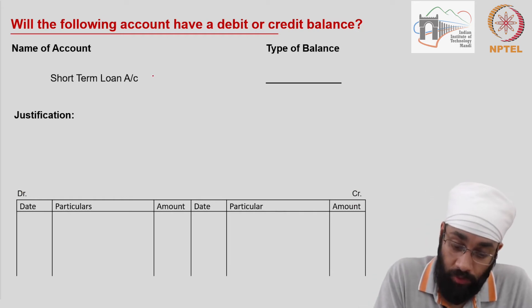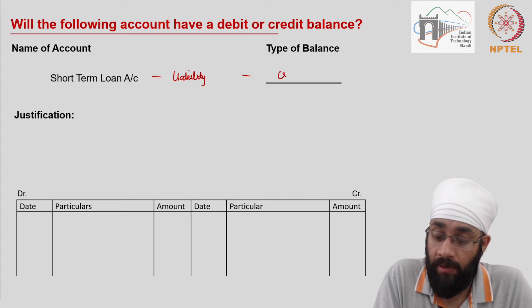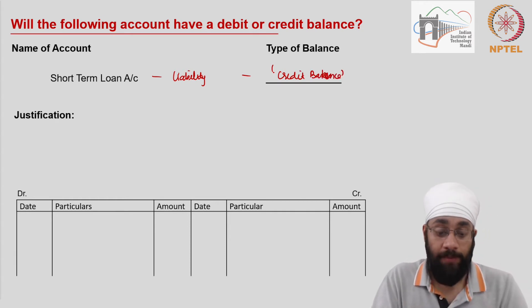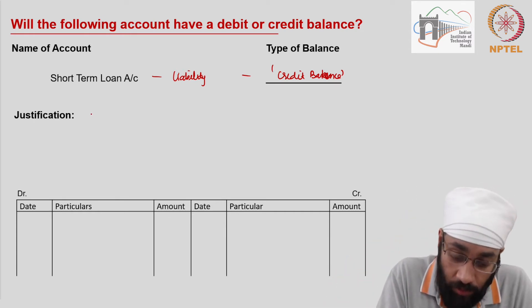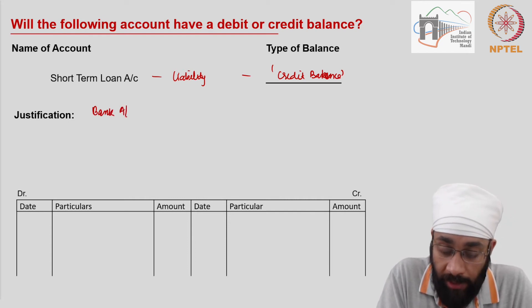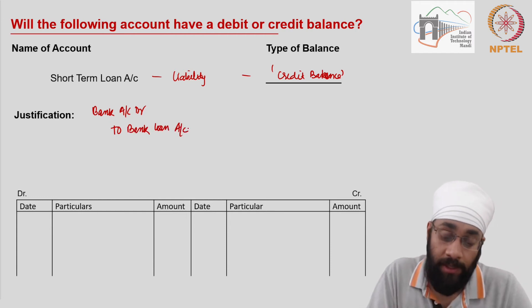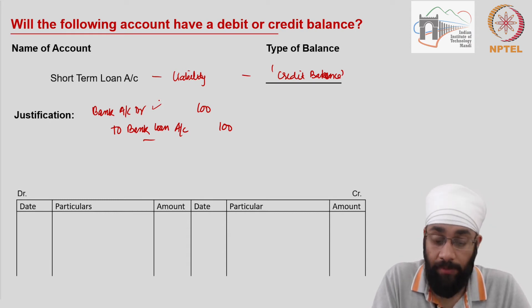Short-term loan is a current liability, and all liabilities always have a credit balance. When you receive a loan, it comes into your bank account: bank account debit to bank loan account — or short-term loan account. Let's say 100 rupees come into the bank account, creating a new liability called bank loan account.